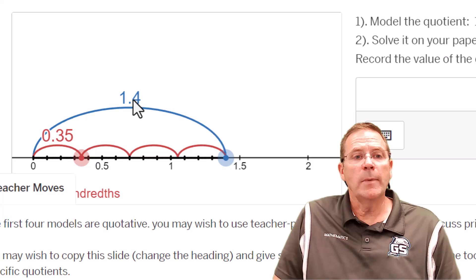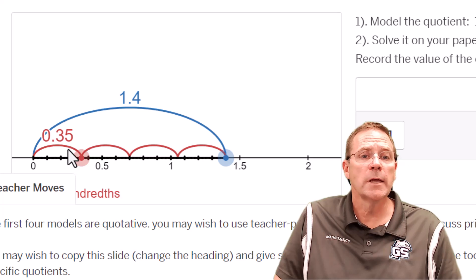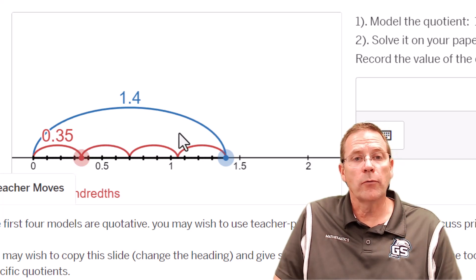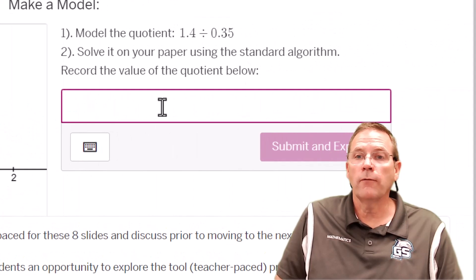So how many times does 0.35 divide into 1 and 4 tenths? That's 1, 2, 3, 4, and your answer that you would end up putting here is 4.